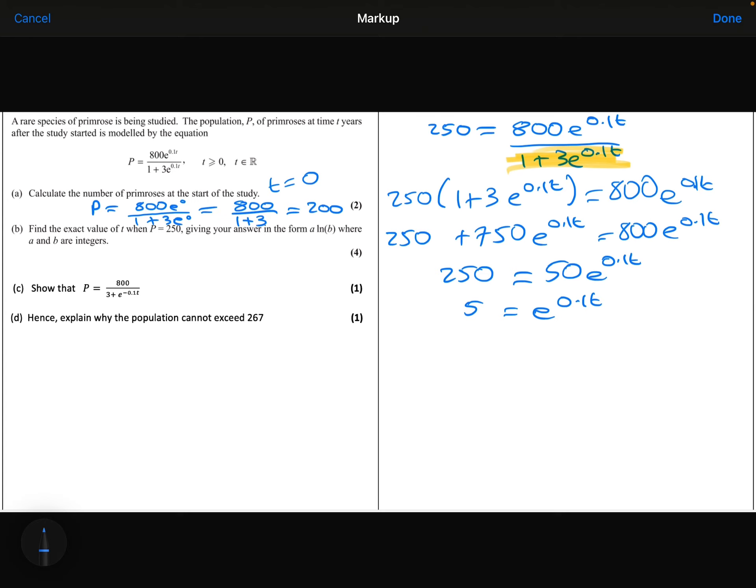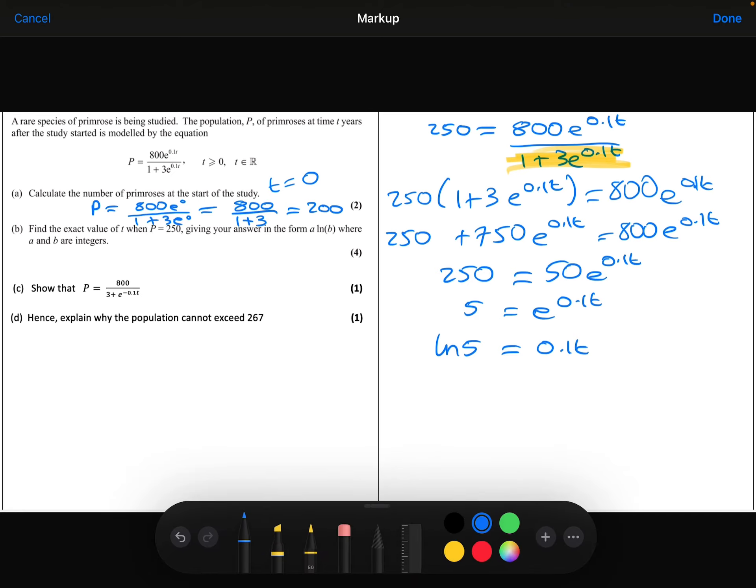Now I can take logarithms of both sides. So ln 5 equals 0.1t, which is the same as 1 tenth t. Times both sides by 10, so 10 ln 5 is t. So that is my answer for part B.